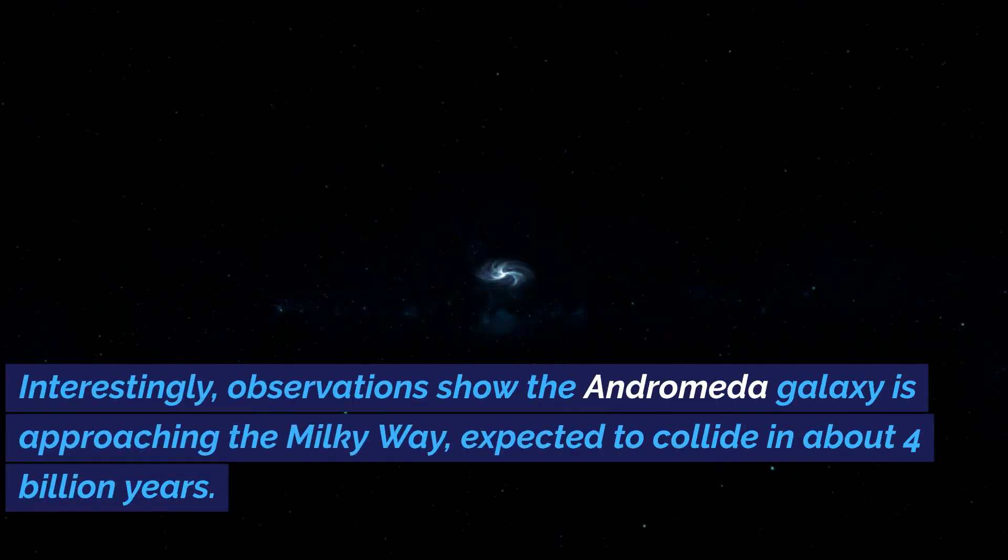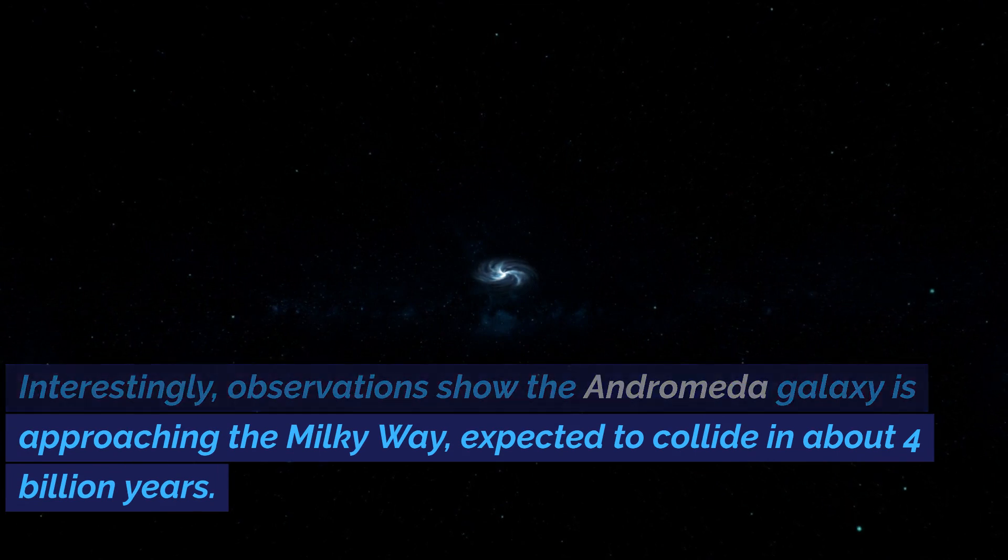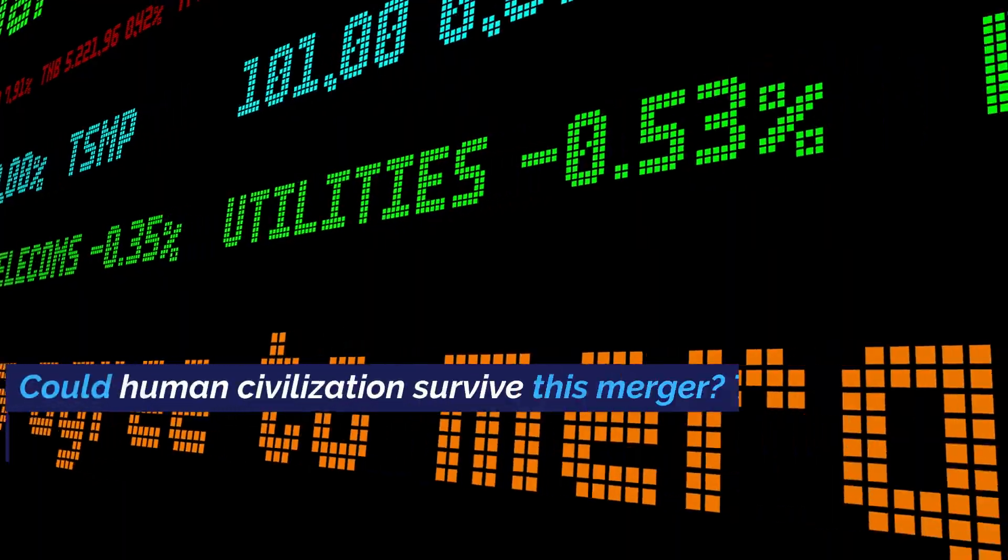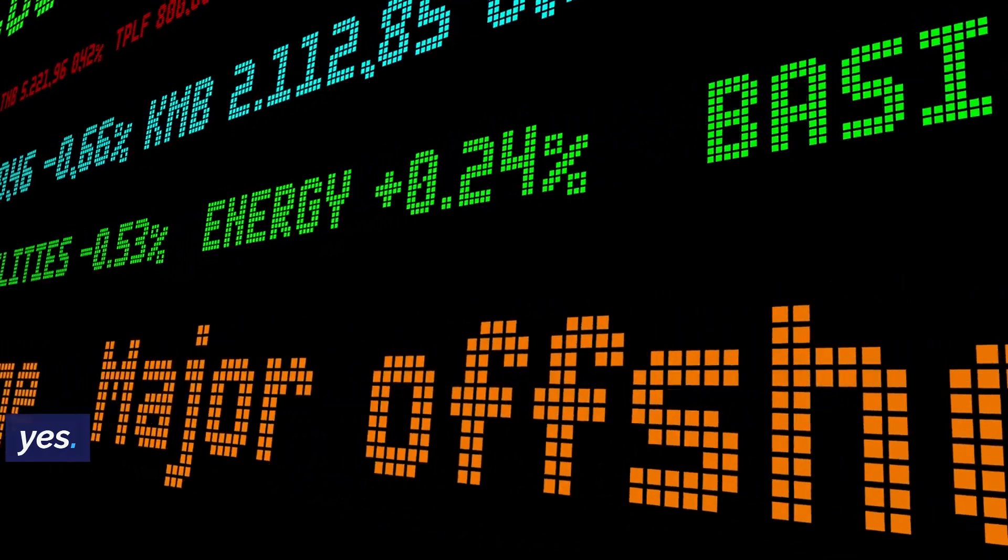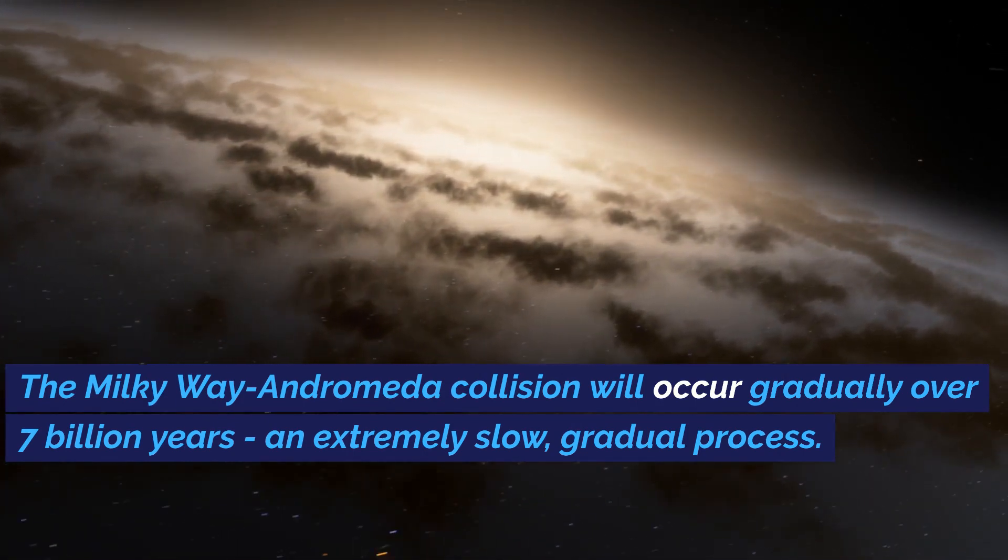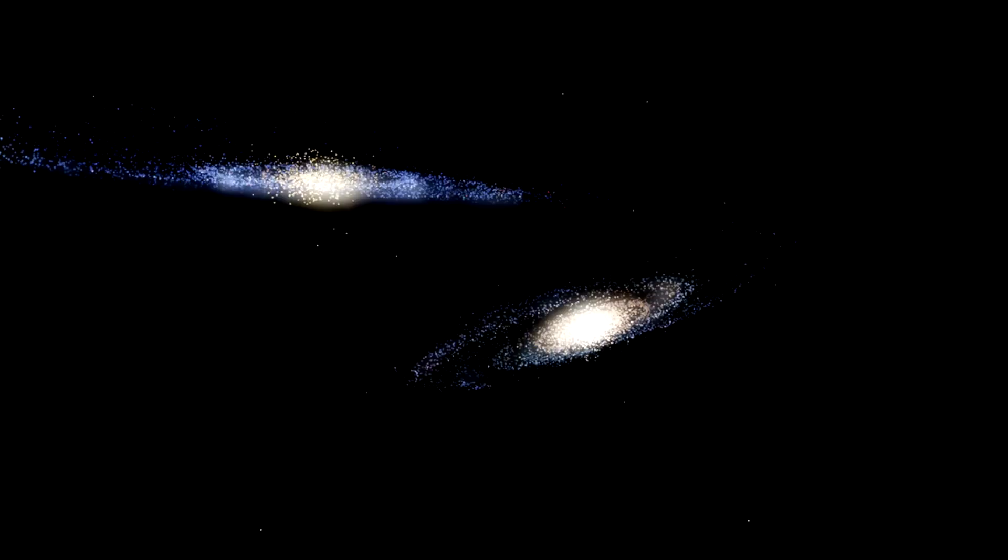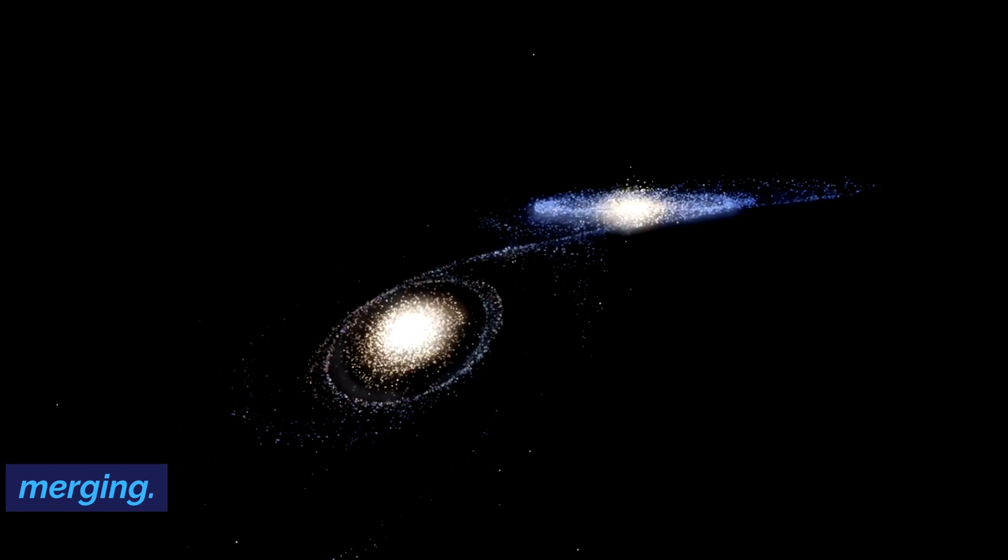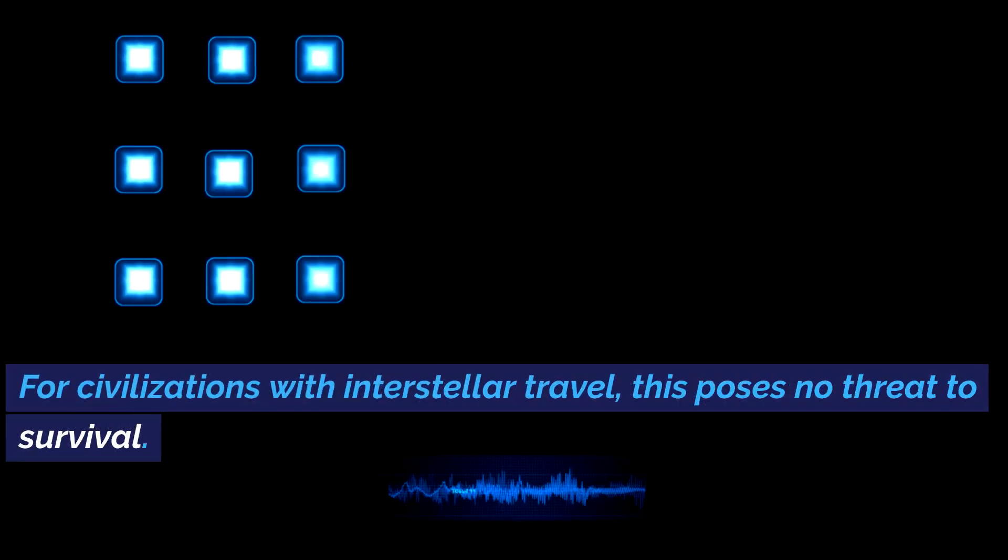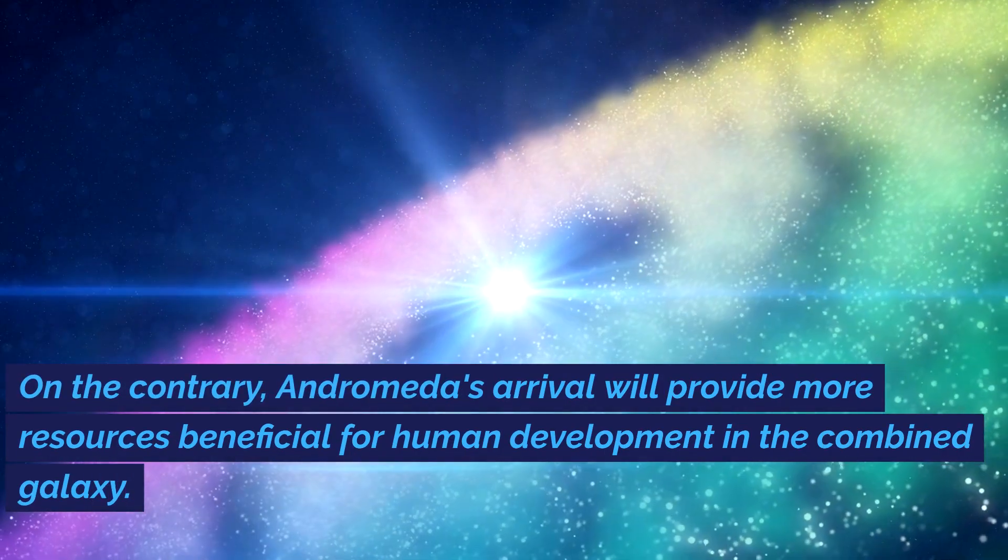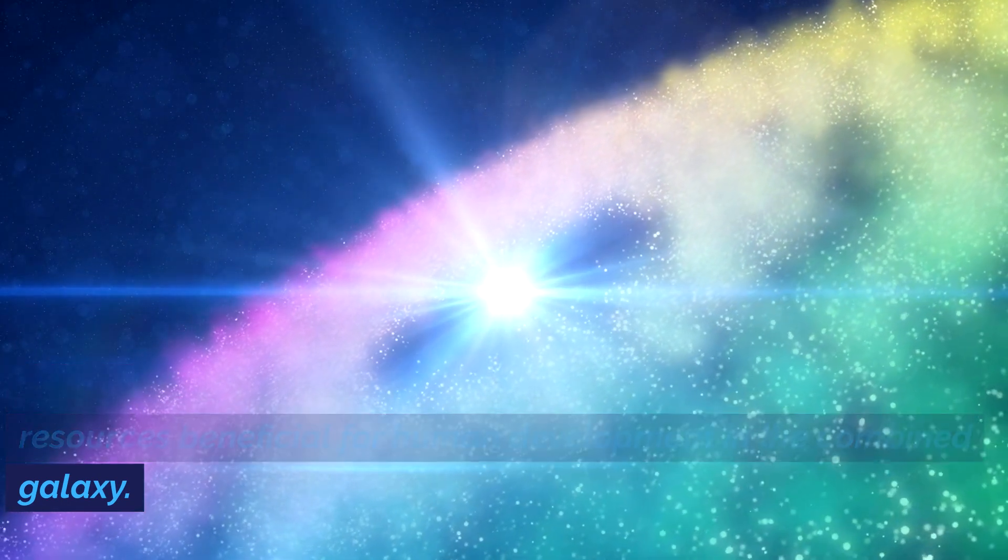Interestingly, observations show the Andromeda galaxy is approaching the Milky Way, expected to collide in about 4 billion years. This galactic collision will result in the two merging into one giant elliptical galaxy. Could human civilizations survive this merger? The answer is yes. The Milky Way-Andromeda collision will occur gradually over 7 billion years, an extremely slow, gradual process. And given the sparse distribution of stars in these giant galaxies, stellar collisions will almost never happen during merging. For civilizations with interstellar travel, this poses no threat to survival.